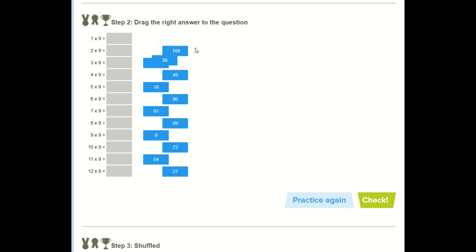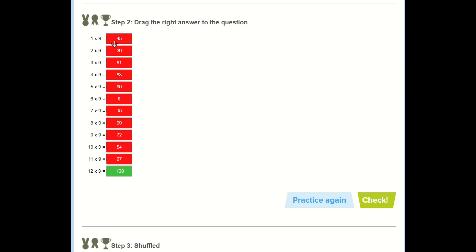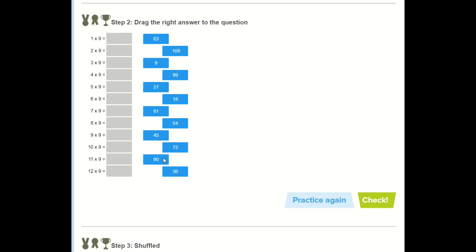On the next step we've got to drag the answer to the correct question. So a hundred and eight. Which times table fact gives us one hundred and eight? We know it's not one times nine. It's twelve times nine. And once I've dragged in all of my answers I'm going to put these in at random just to see what will happen. Definitely not how we should do it. But once I think I've got them right I can click check and I can see actually I've got them all wrong apart from the first one. So I'll click practice again and have another go. I can have as many goes as I need or I want to.